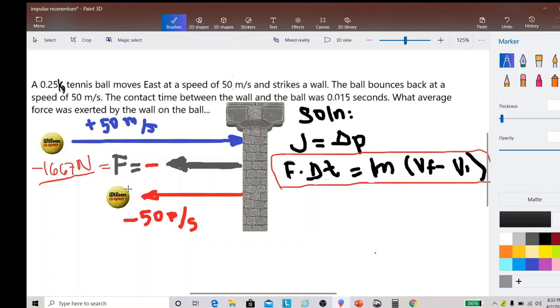I already pre-illustrated this problem to save some time. We have this wall and there is the tennis ball that is going to the east represented by the blue arrow with a speed of 50 m/s. Take note that the sign is positive because it is going to the right. As convention, going to the right or going eastward is positive.